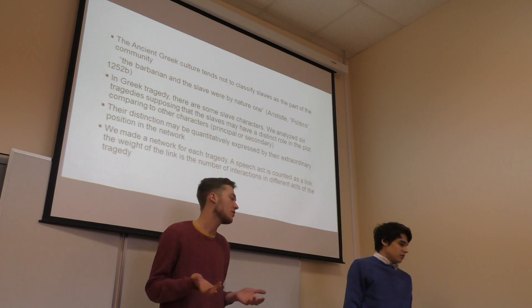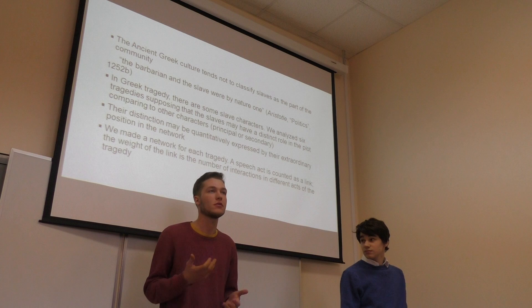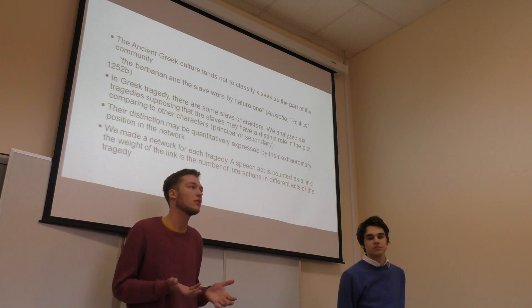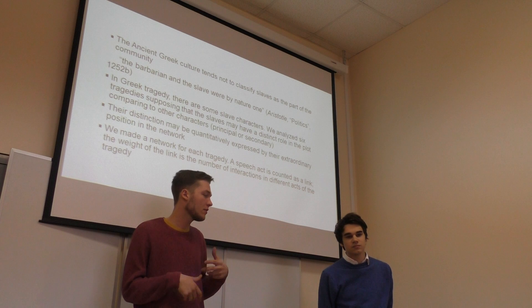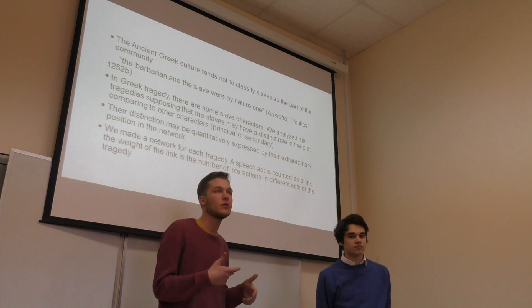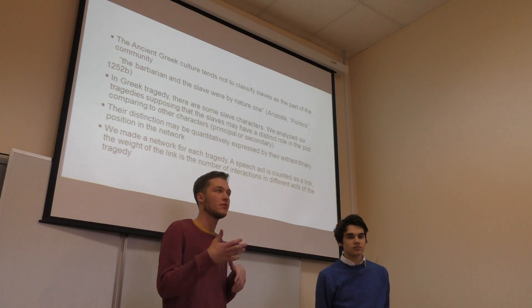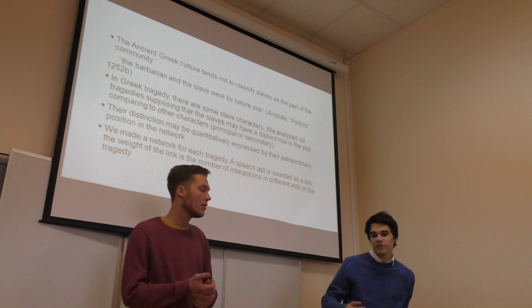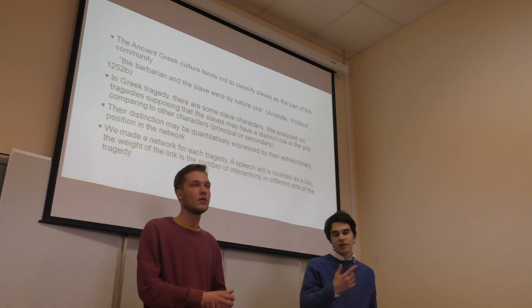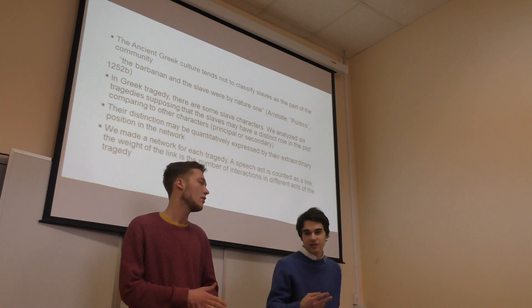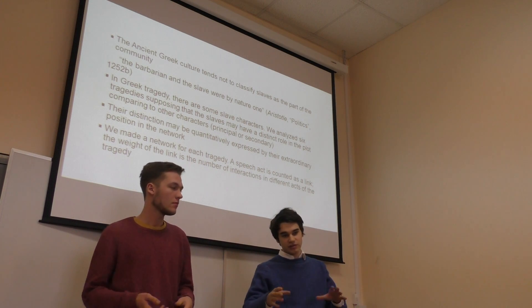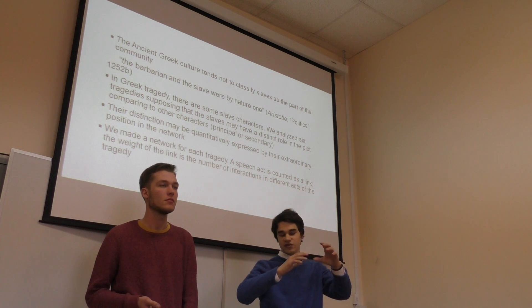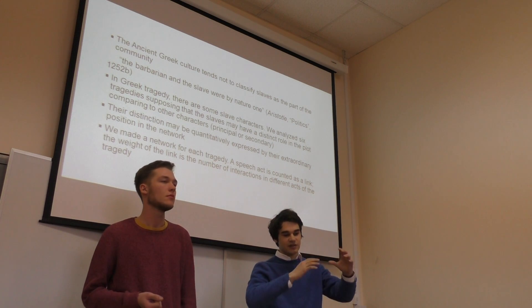As for the methodology, we made a network for each of the six tragedies and we counted as a link each speech act — a monologue or dialogue. The weight of each link was determined by the appearance of the characters who speak together in different acts of the tragedy. For example, if Antigone and another character talk to each other in one act, the weight of their link will be one; if in two acts, it will be two. Ancient tragedies are very classical in form, so we also have this structure of acts, then the chorus scene, then another act.